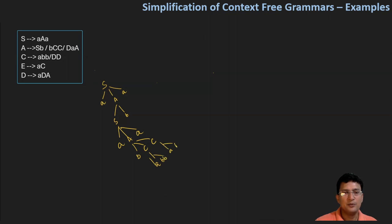And again, this also produces abb. So that means we can see these symbols all eventually reach terminal symbols. So S, A, and C are all generating symbols in our productions.